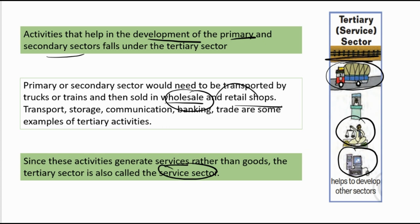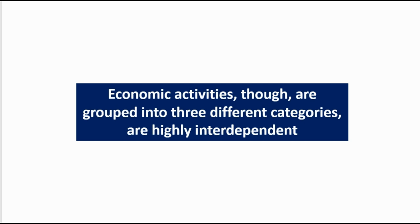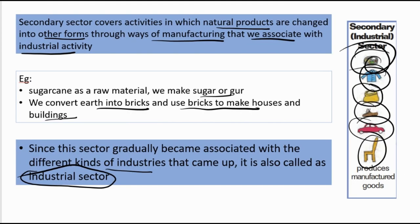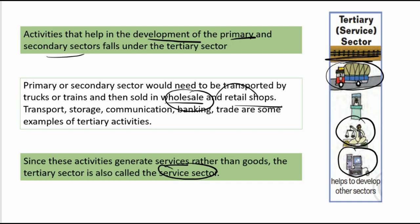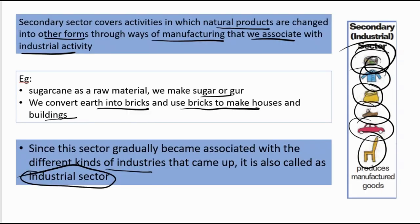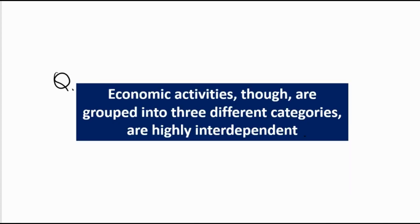Although economic activities are grouped into three different categories, they are highly interdependent. This is one of the important questions — if asked to explain, write about all three sectors with examples. From primary resources, natural things are processed; then processed as secondary sector goods; then transported to shops where consumers buy them — that is the service or tertiary sector. Write the names: agriculture sector, industrial sector, service sector.